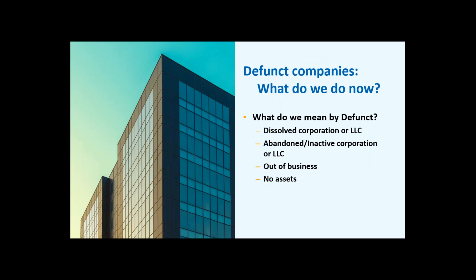Now Jim is going to walk us through defunct companies. A defunct company can mean a few things: it can be an LLC or corporation that is dissolved — meaning they've filed papers with the Secretary of State to eliminate their corporate charter and no longer exist. It could also be a company that exists but is not being used — it's abandoned — or it's out of business, or it's a company with no assets. We're going to categorize all of these types of entities as 'defunct.'